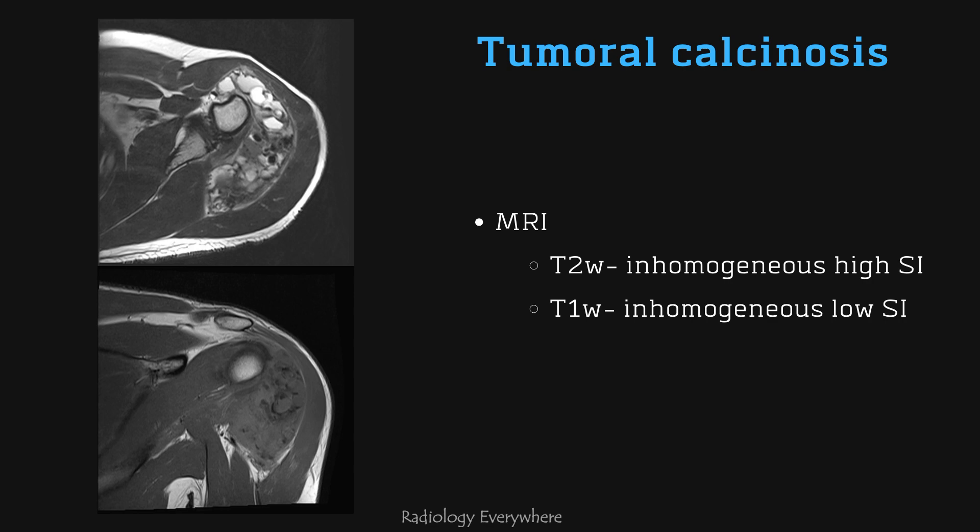When considering MRI, you can see inhomogeneous high signal intensity on T2-weighted images and inhomogeneous lesions with low signal intensity on T1-weighted images.